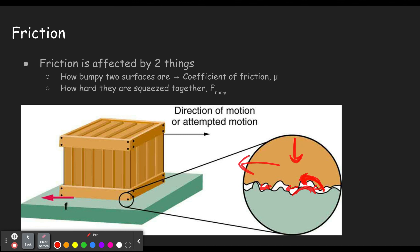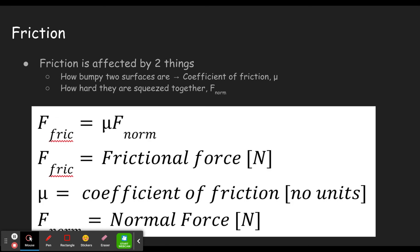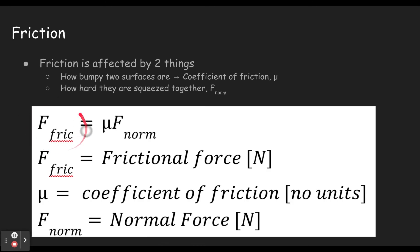When we put those together in an equation, it looks like this: the force of friction equals the coefficient of friction (mu) times the normal force — how hard they're squeezed together. The coefficient of friction is a ratio of the two forces, so it doesn't have units — one of the very few things in physics without units. Together, the coefficient of friction representing bumpiness and the normal force representing squeeze give us the force of friction.